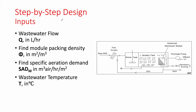Now we will go through the step-by-step design, starting with the inputs. First, we need the wastewater flow — usually given in cubic meters per day but converted to liters per hour using a basic conversion. Then we need the module packing density φ from the manufacturer's catalog.